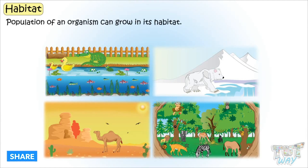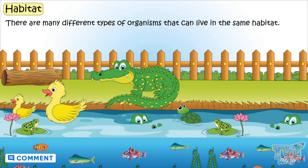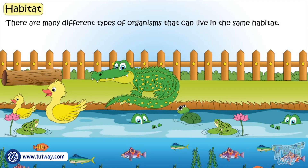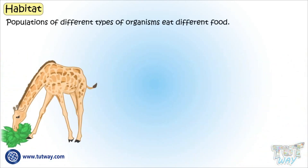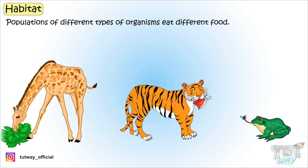Population of that organism can grow in its habitat. There are many different types of organisms that can live in the same habitat, and populations of different types of organisms eat different food. And there is a flow of energy in a habitat. Let's see how.